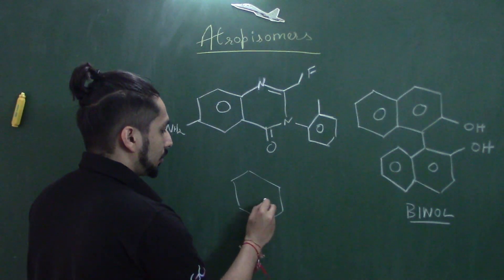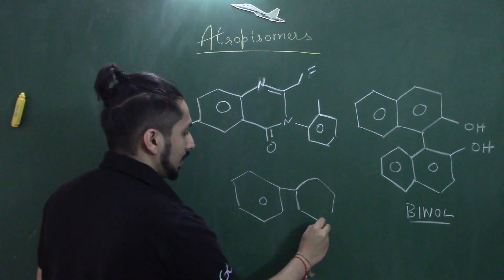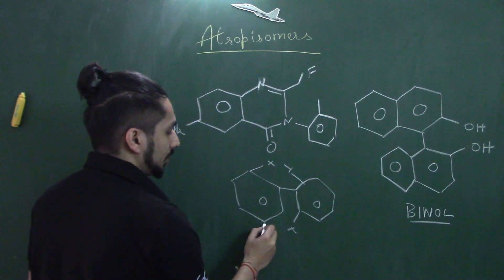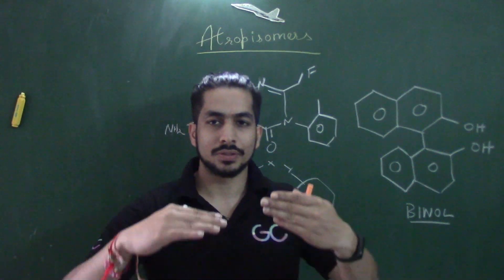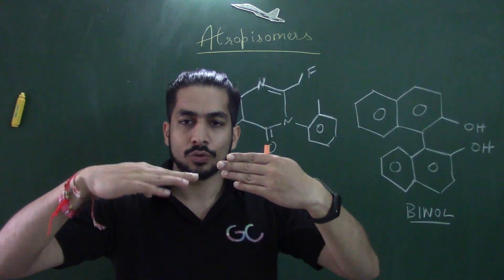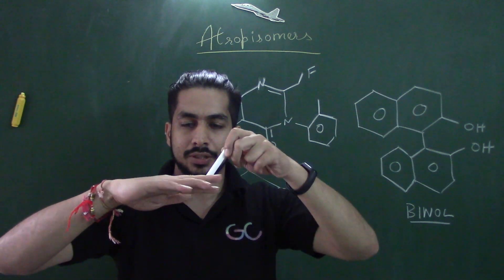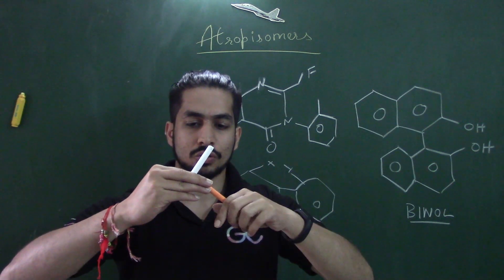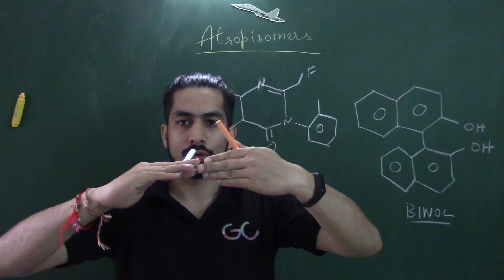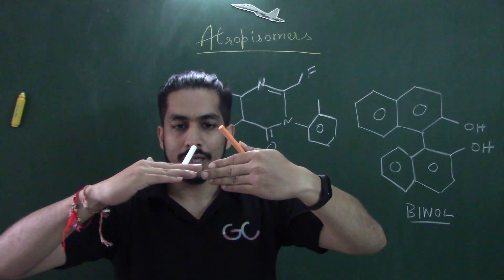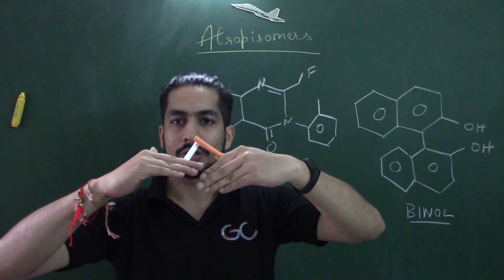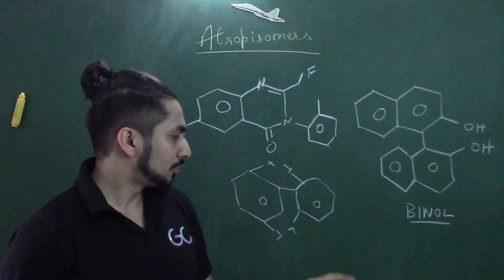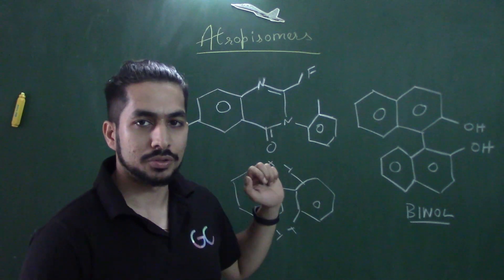Let's take a simple biphenyl system to understand this easily. On this biphenyl system, we have two bulky groups X and Y on one ring and similarly X and Y on the other. Biphenyl systems are oriented like this — the substituents at the ortho positions (shown here with white and orange chalk) clash when you try to rotate the rings. Because of this clashing, a chiral axis is generated in the molecule, making it chiral.